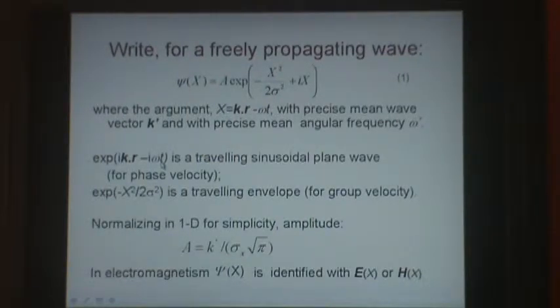You can see it's a travelling sine wave, because when k dot r equals omega t, chi is a maximum. The velocity equals omega divided by k, which equals the frequency multiplied by the wavelength of a travelling sinusoidal plane wave. This is the phase velocity.